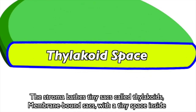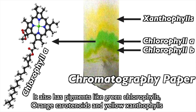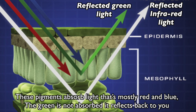The stroma bathes tiny stacked thylakoids — membrane-bound sacs with a tiny space inside. The thylakoid's membrane is loaded with protein; it's the light reaction's main scene. It also has pigments like green chlorophylls, orange carotenoids, and yellow xanthophylls. These pigments absorb light that's mostly red and blue; the green is not absorbed — it reflects back to you.